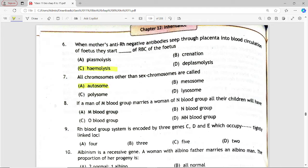Next is: If a man of M blood group marries a woman of N blood group, their children will have? Options are: M blood group, N blood group, O blood group, MN blood group. Answer is option D, MN blood group.